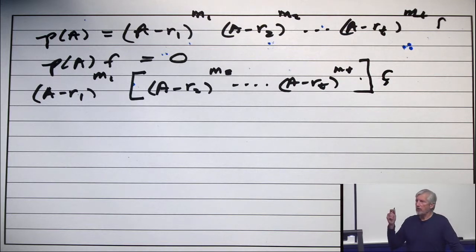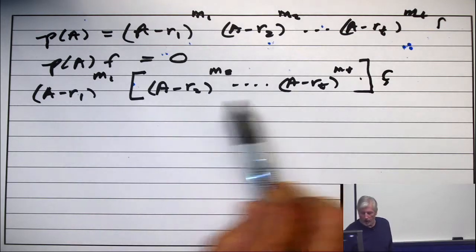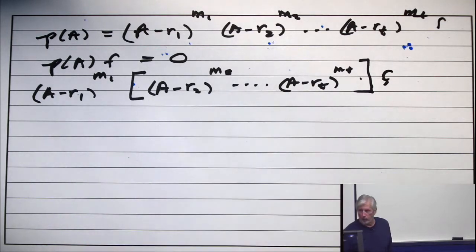But remember how different operators behave on polynomials. They don't kill them. So when you apply A minus S to A minus R, it doesn't kill it. All right. And so now it's just an induction on the different roots.